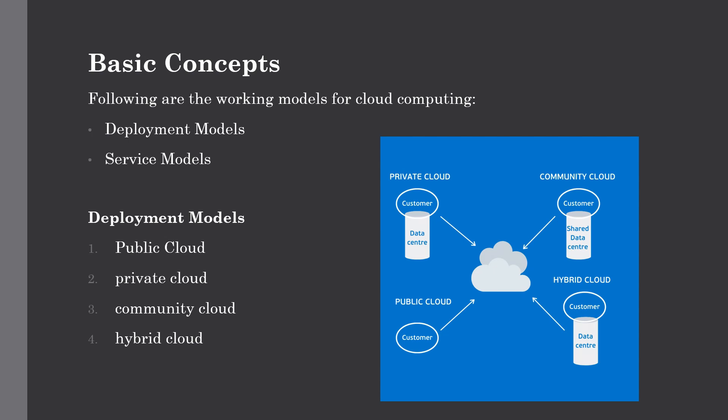The first type is public cloud, which allows systems and services to be easily accessible to the general public. The public cloud may be less secure because of its openness — it is like an open platform system. The second is private cloud, which allows systems and services to be accessible only within an organization, making it very secure. The third is community cloud, which allows systems and services to be accessible by a group of organizations — similar to private cloud but shared among multiple organizations.